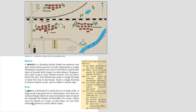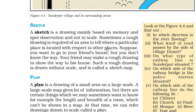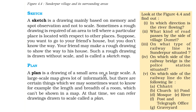Then there is a sketch. A sketch is a drawing mainly based on memory and spot observation, and it does not follow a scale. Sometimes a rough drawing is required to show whether a particular place is located with respect to other places. For example, if you want to go to your friend's house but don't know the way, your friend may make a rough drawing to show the way. Such a rough drawing drawn without a scale is called a sketch map.